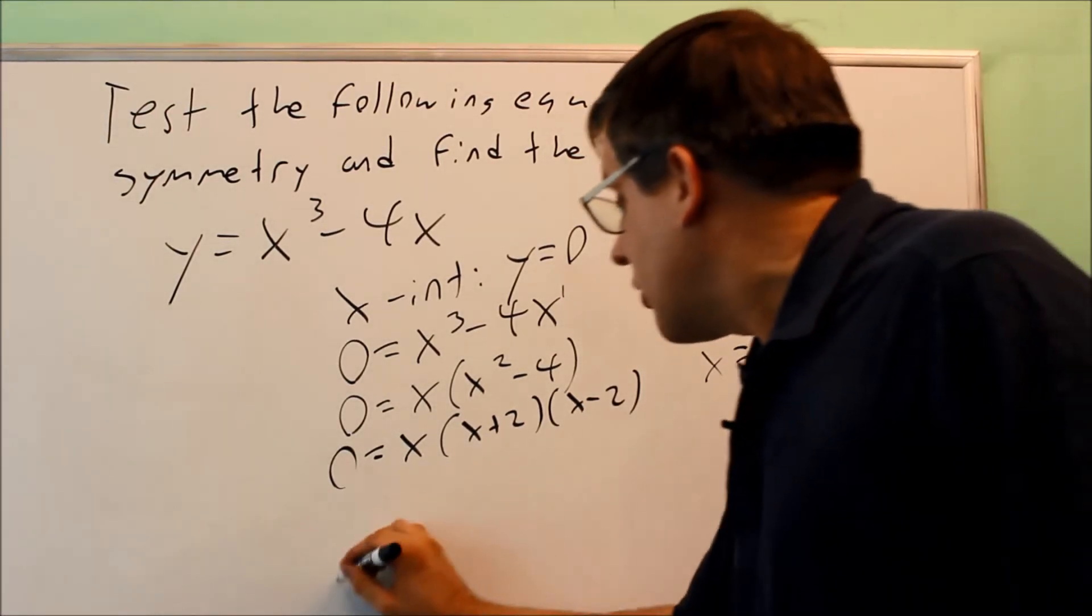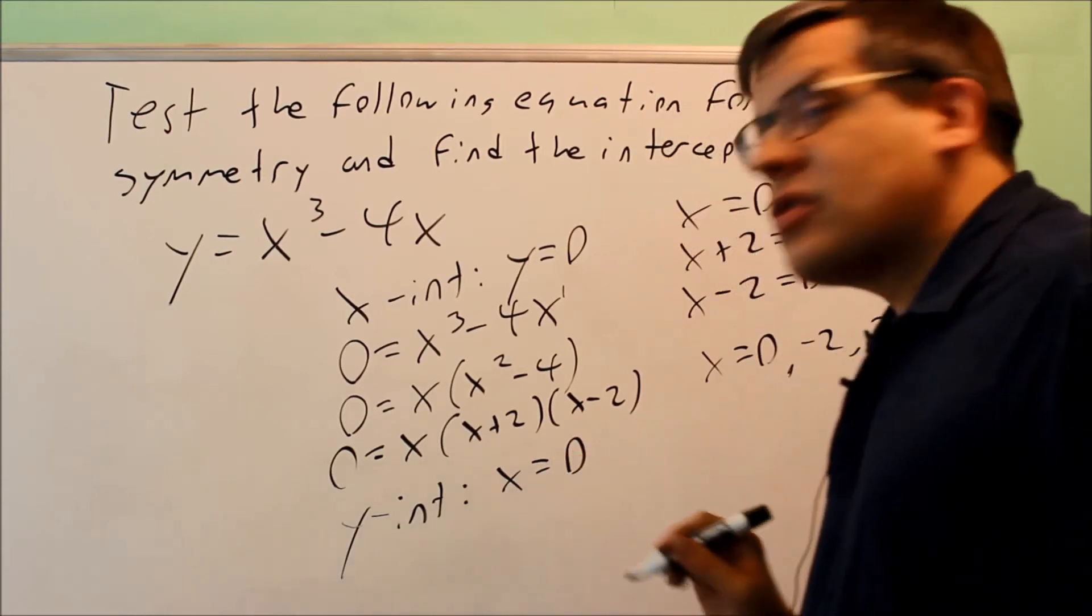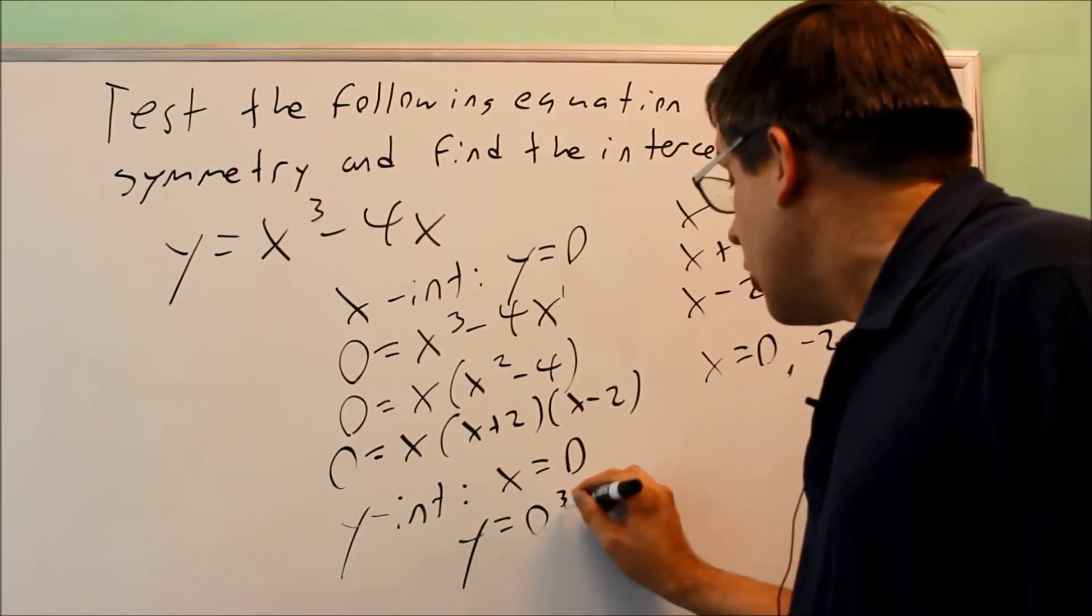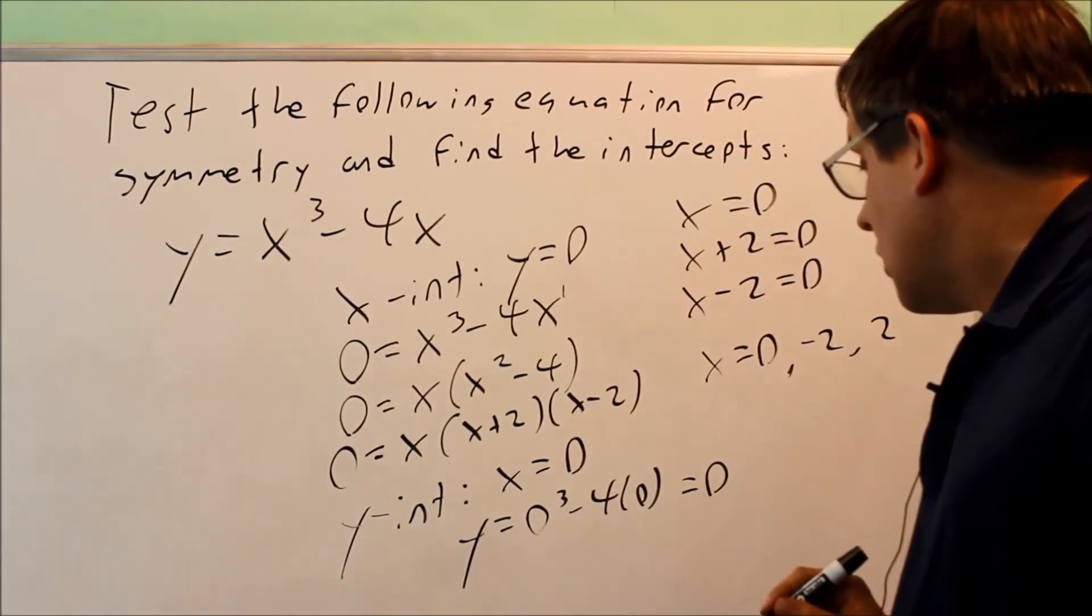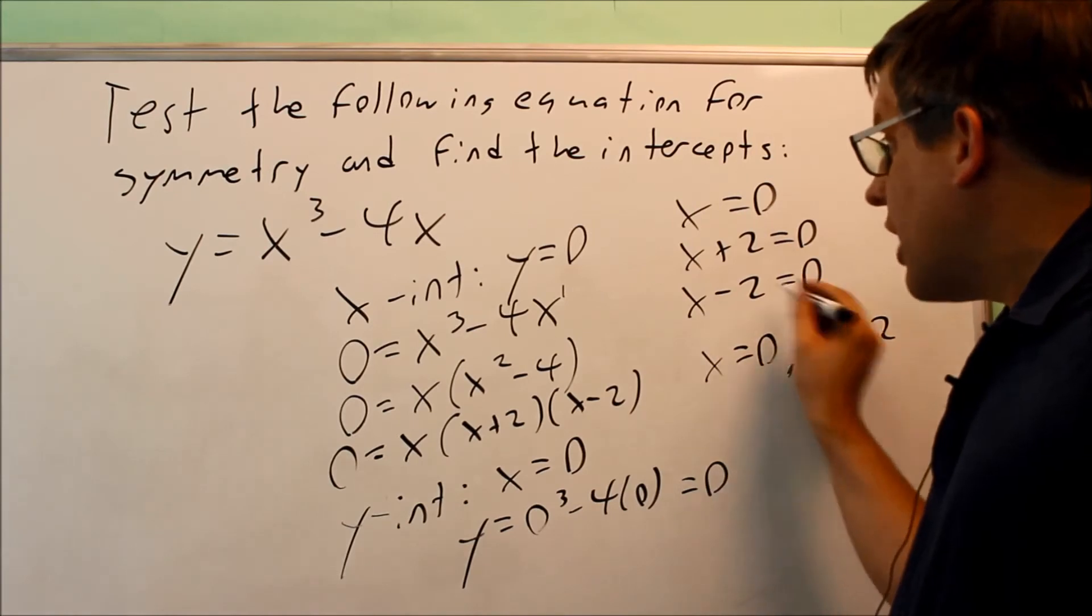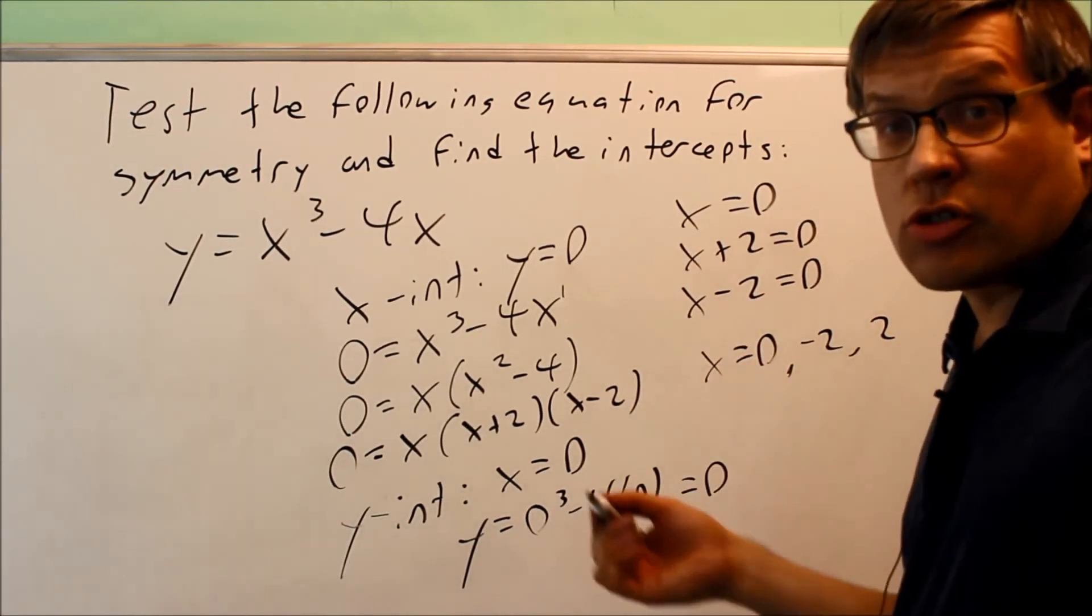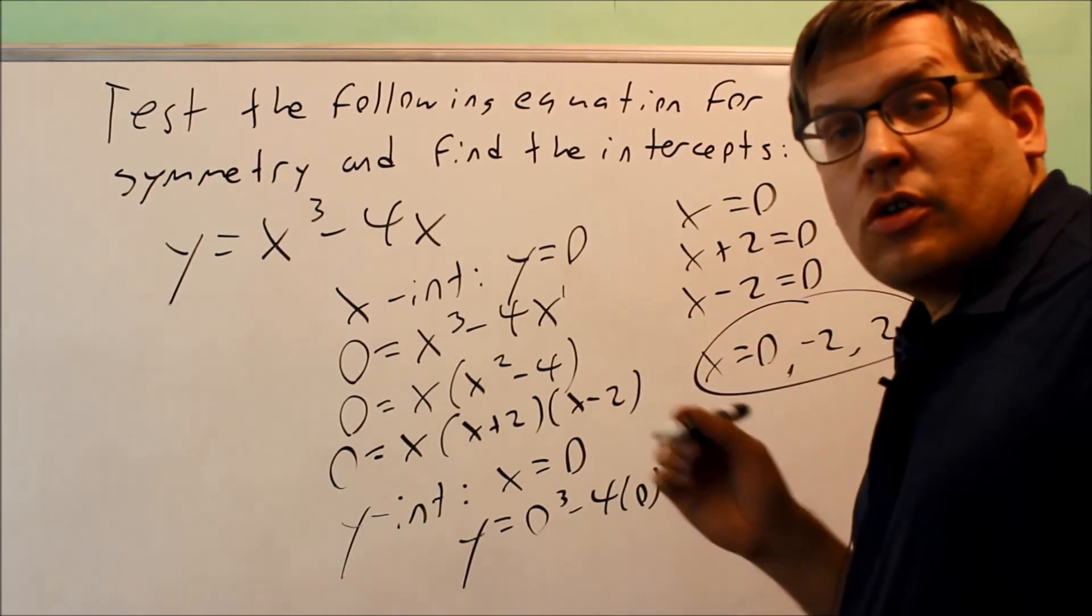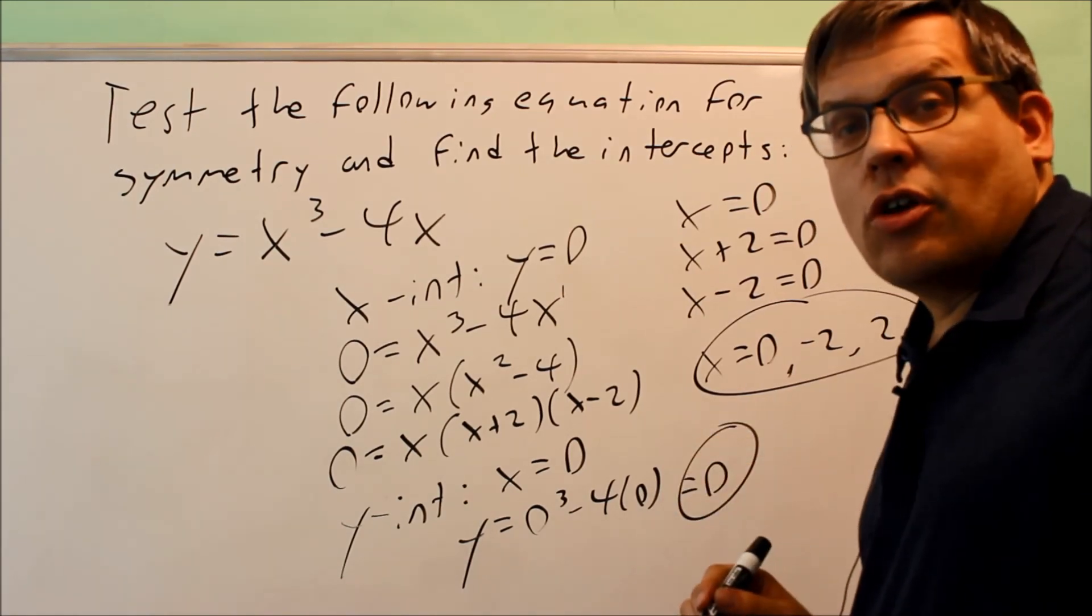But now I want to find the y-intercept. For y-intercept, you put in a 0 for x. I get 0 cubed minus 4 times 0. That gives me 0. So again, because I got a 0 for the x-intercept, usually you're going to get a 0 for the y-intercept as well because it goes through 0, 0. Your x-intercepts: 0, negative 2, and 2. Your y-intercept is just going to be 0.